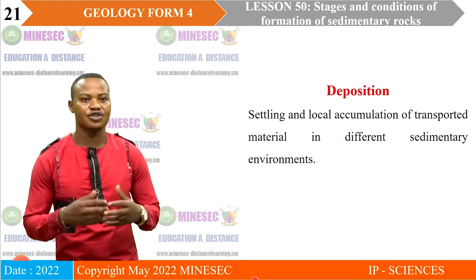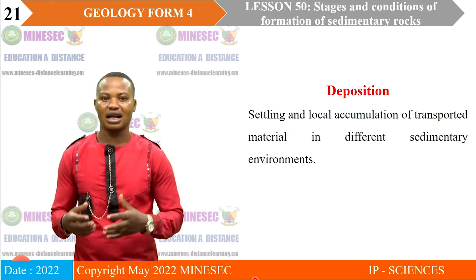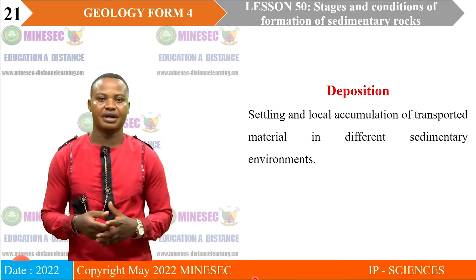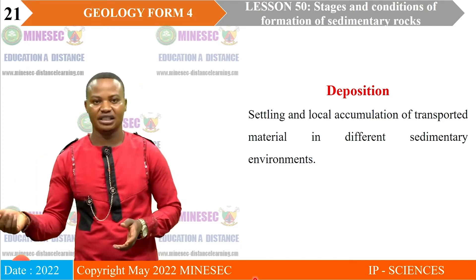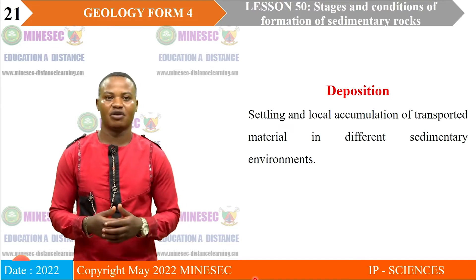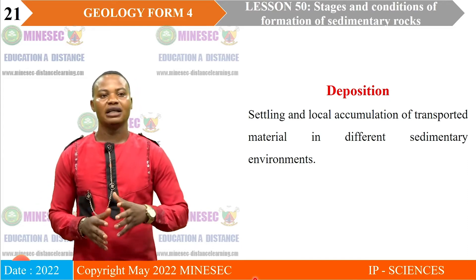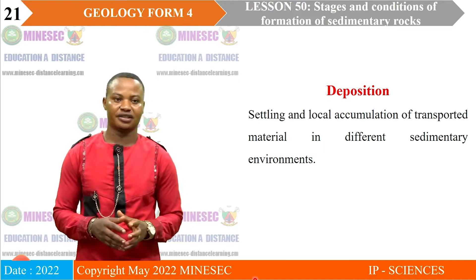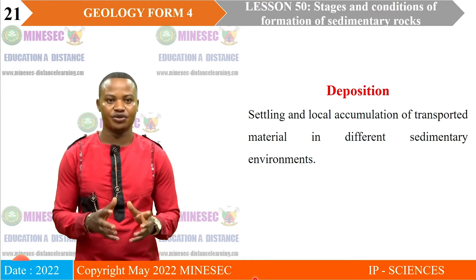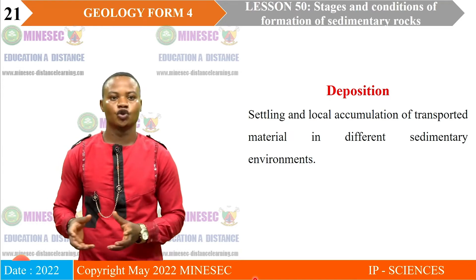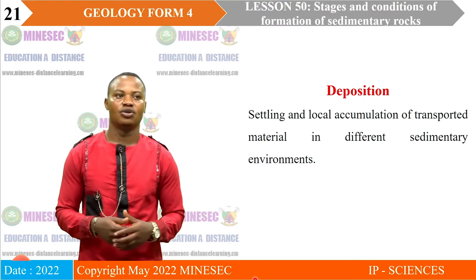The next stage is deposition — the gradual settling or local accumulation of transported materials in different sedimentary environments, such as the desert, sea, oceans, lakes, or marshy environments. Deposition occurs when the velocity of the transporting agent reduces, so it no longer has the force to carry the material and drops it.